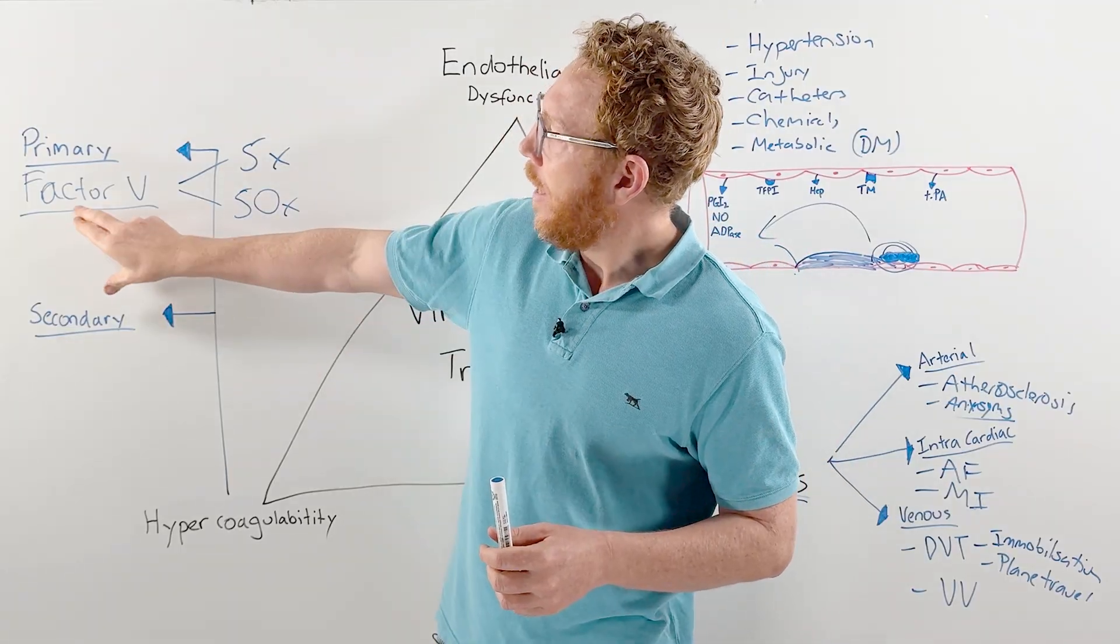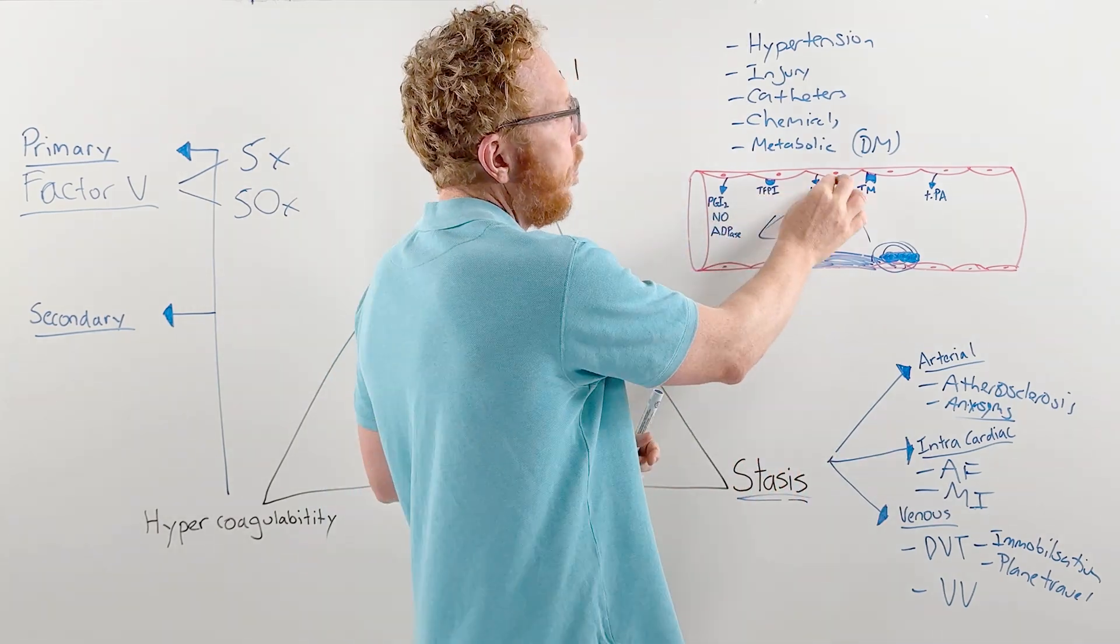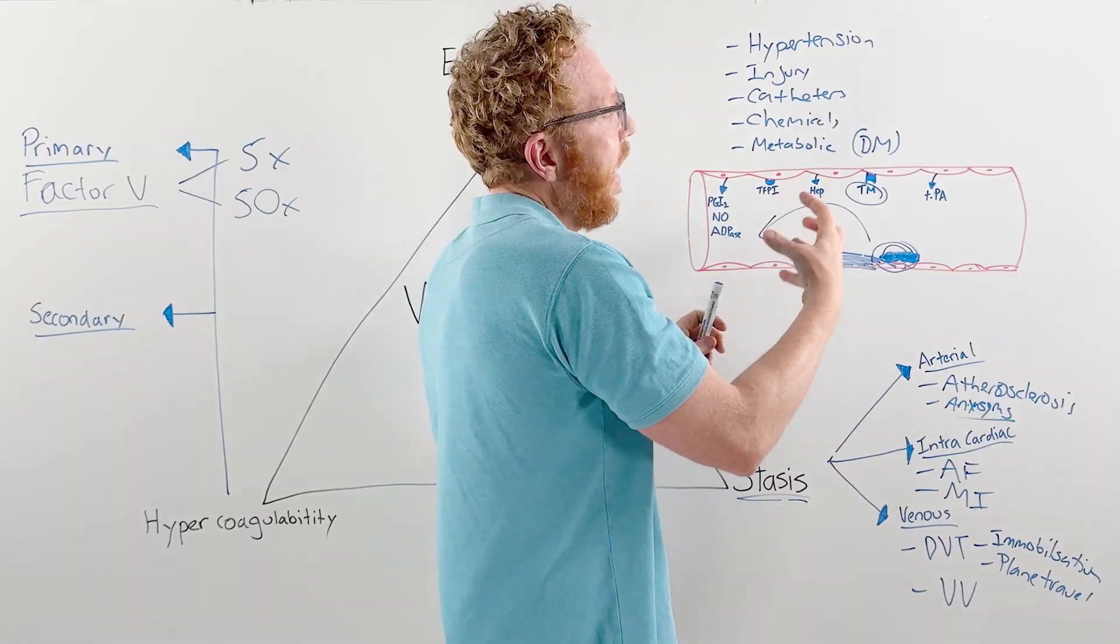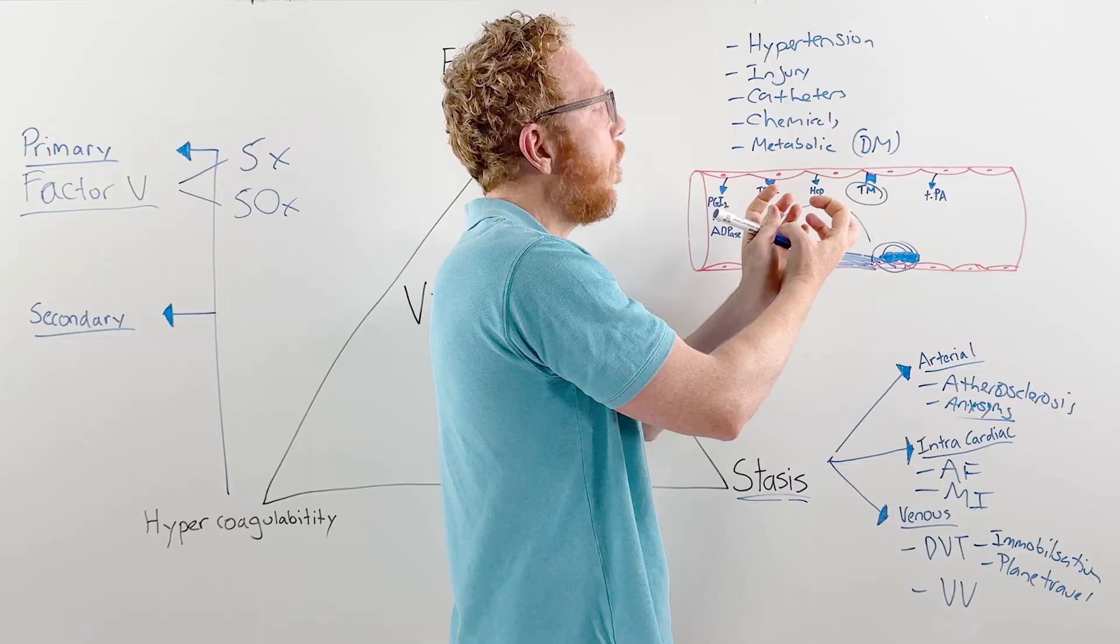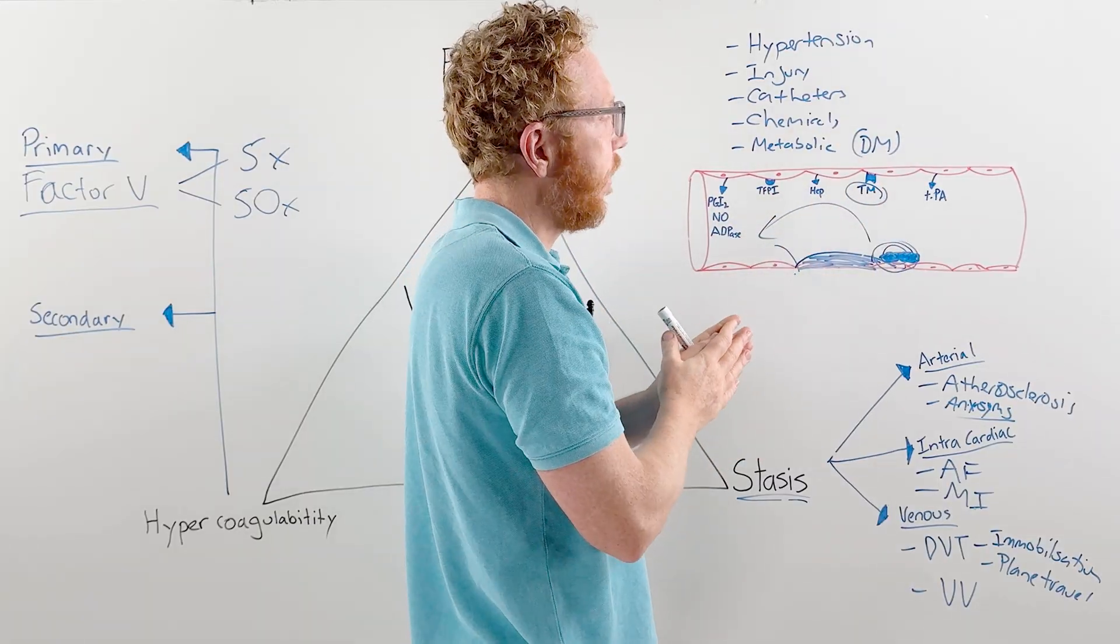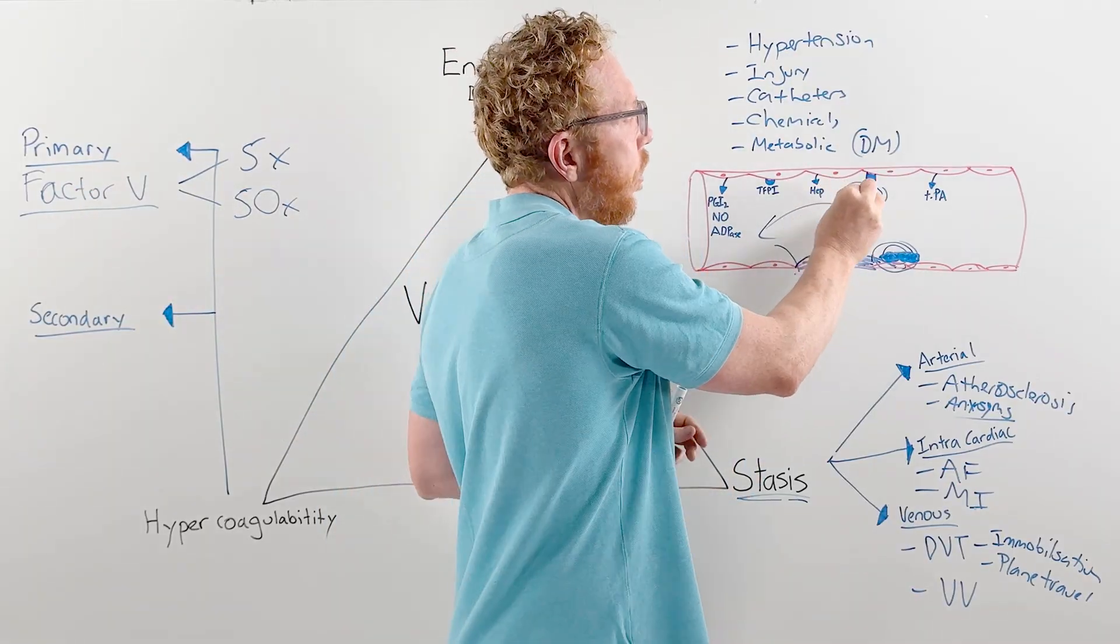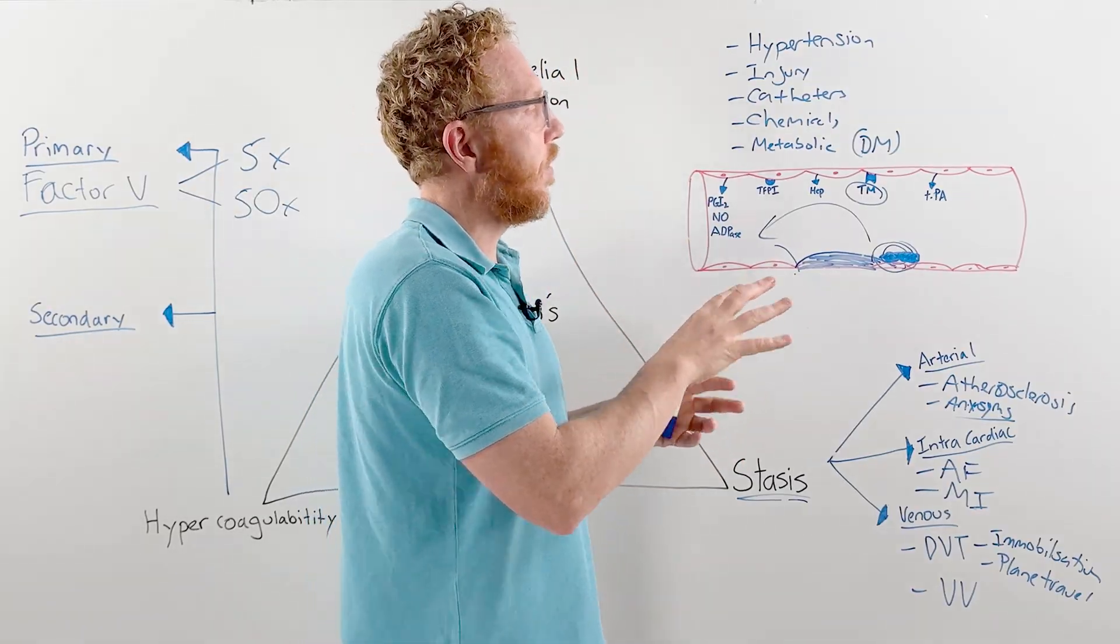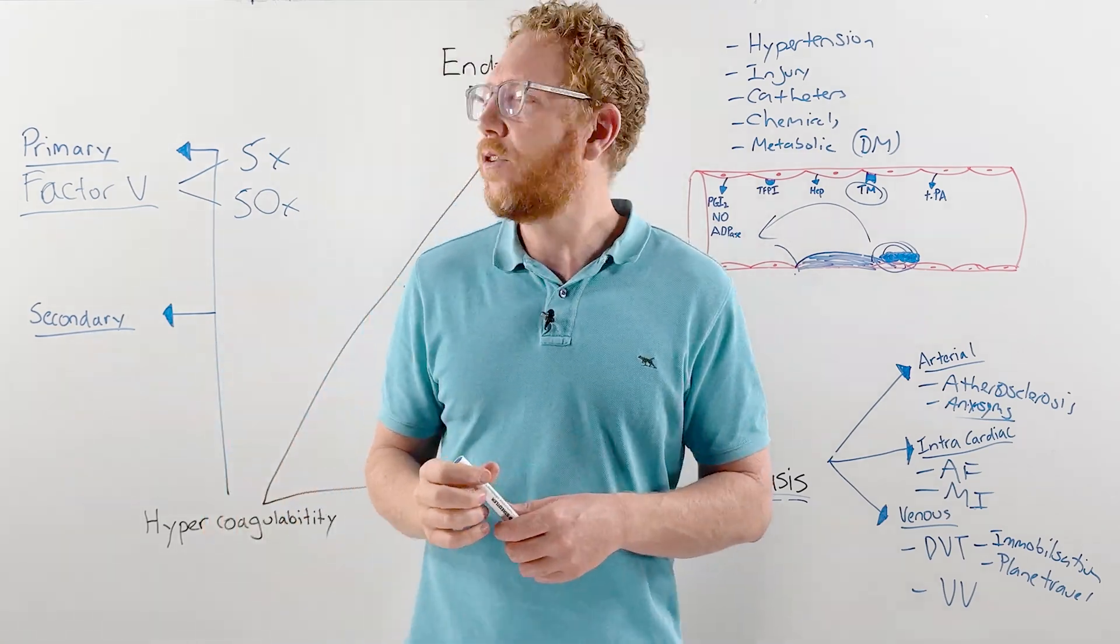The reason for this is factor V, with the mutation, changes its shape. Normally we have thrombomodulin which binds to thrombin (factor II). Then as a complex, it binds with protein C and protein S—quite a large construct. It goes around wanting to chop factor 5 and 8 up, which are activated. But because we've got a mutation in factor V and its shape has changed, it no longer binds to this complex. Therefore, factor V, which is part of the central process, remains activated, and we have a greater likelihood of the clotting process to ensue.